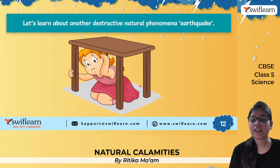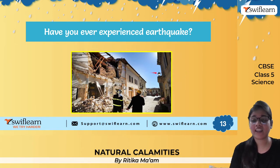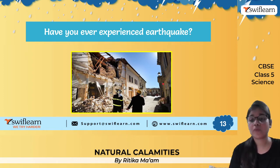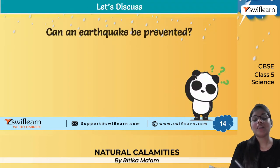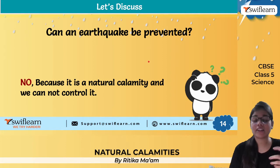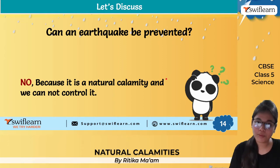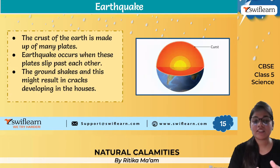Now let us begin with the phenomenon of earthquake. Have you ever experienced an earthquake? I wish that nobody ever experiences this, because it leads to loss of life, property, and more. Regarding earthquake — it cannot be prevented. We can never prevent any natural calamity; we cannot control it. But if it occurs, there are things we need to take care of to minimize loss of life and property.